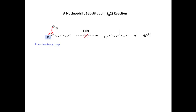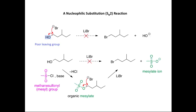The reason this reaction doesn't work is that the OH group is a poor leaving group. What we need to do is convert the OH group into a good leaving group, such that it is then subsequently substituted by Br- to form the product. We're going to convert the primary alcohol into a good leaving group — namely an organic mesylate — and then the organic mesylate is subsequently converted into the primary bromide.